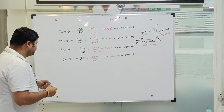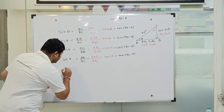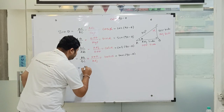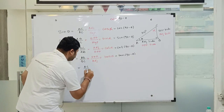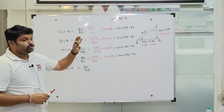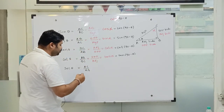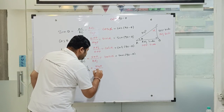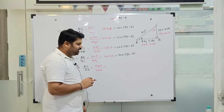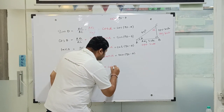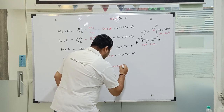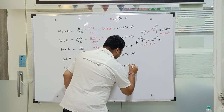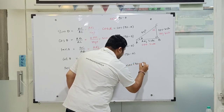Next we have sec theta. Sec theta would be AC upon AB. However, with reference to alpha, it is hypotenuse upon opposite side, which is cosec alpha. So sec theta is equal to cosec of 90 minus theta.